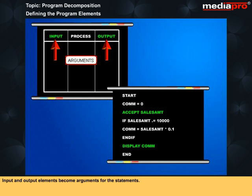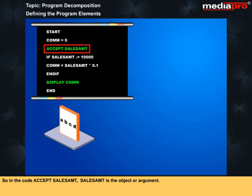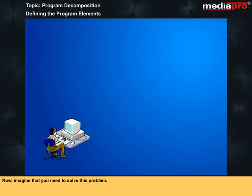Input and output elements become arguments for the statement. In programming statements, arguments are comparable to objects in the grammar of human language sentences. So in the code, accept sales amount, sales amount is the object or argument.